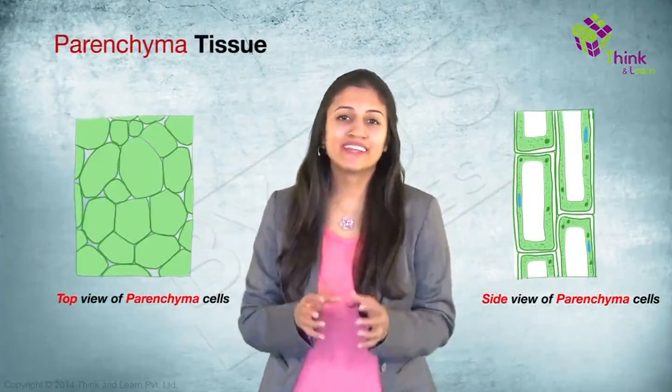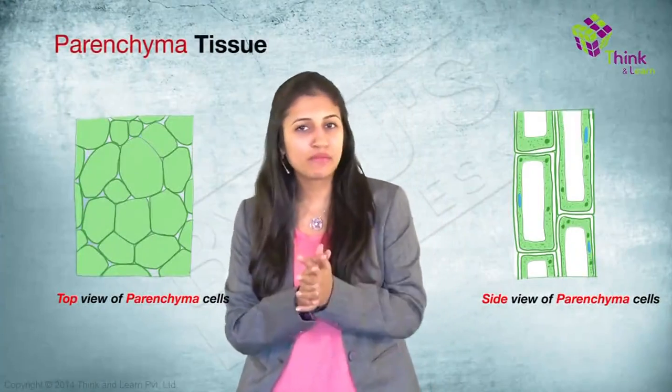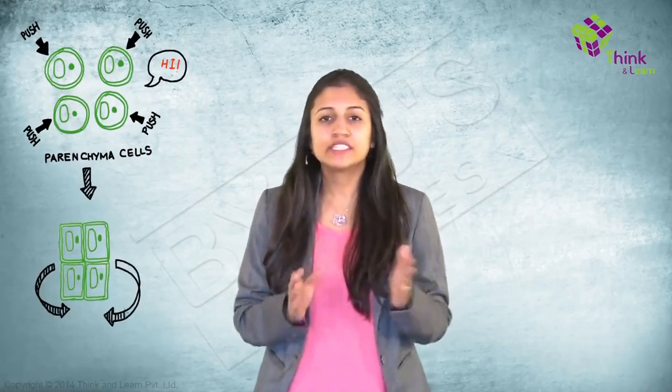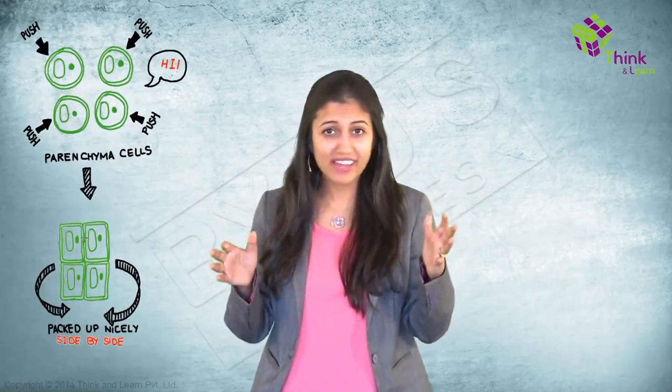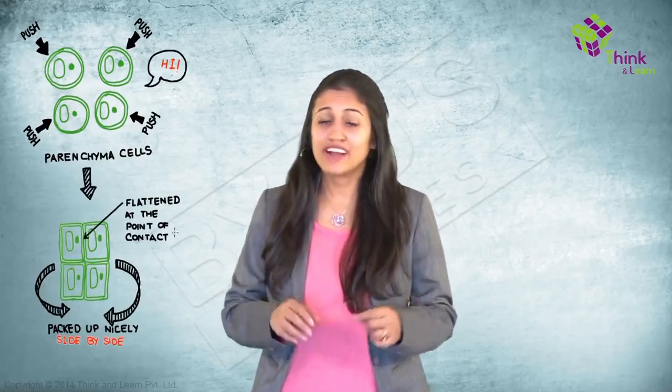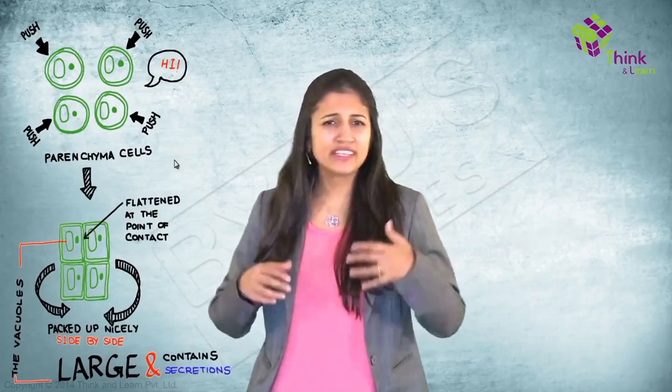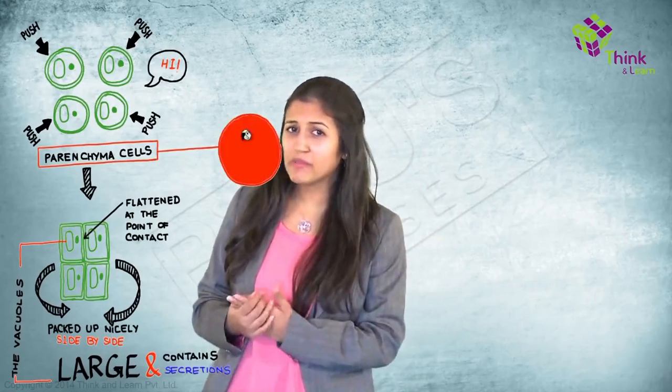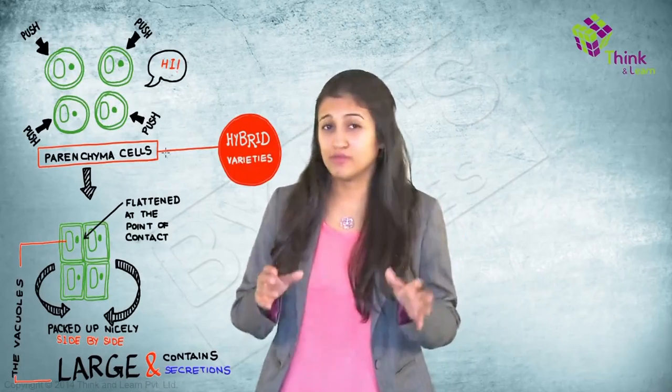Parenchyma, made up of parenchyma cells, the most abundant cell type found in all major parts in higher plants. When they're first made, they're spherical in shape and then they get packed up nicely, side by side. And because of their thin walls, they go on and get flattened at the points of contact. The vacuoles are large and can contain some secretions like starch, oils and some crystals. Now, there are some hybrid varieties of parenchyma cells depending on where they're found and they have some obvious names too.